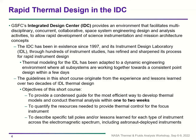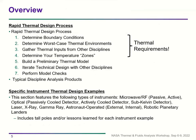This slide provides a general overview of the two-part course. Part one covers the rapid thermal design process: determining boundary conditions, determining worst case thermal environments, gathering thermal inputs from other disciplines, and determining temperature zones — all under the umbrella of thermal requirements. Then the model-building phases: building a preliminary thermal model, iterating the technical design with other disciplines, performing model checks, and typical discipline analysis products.